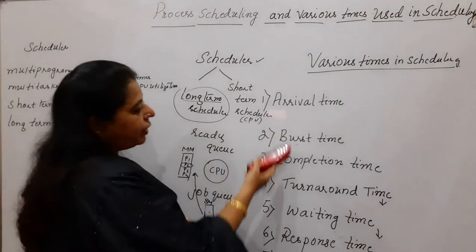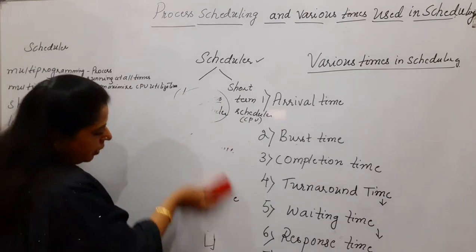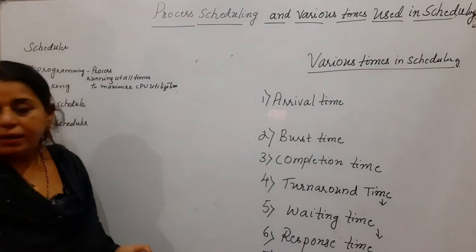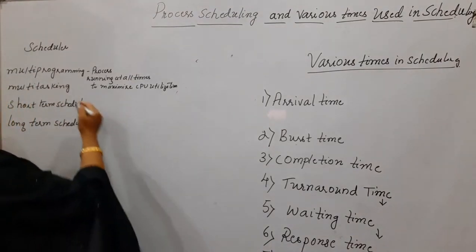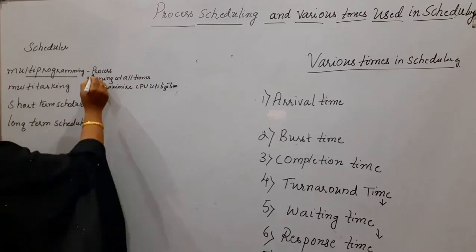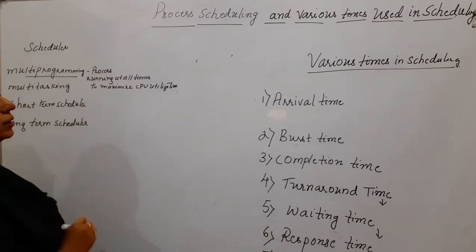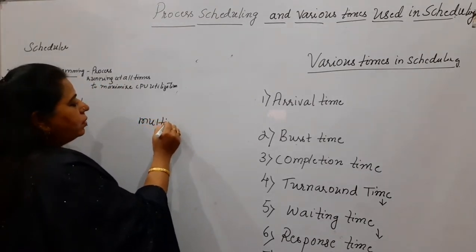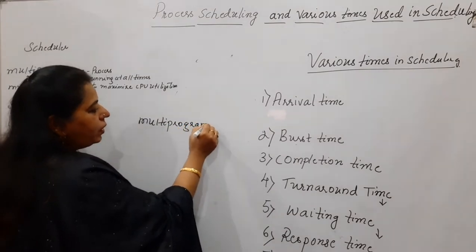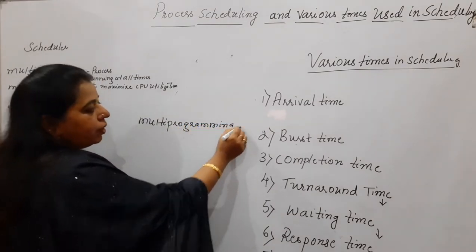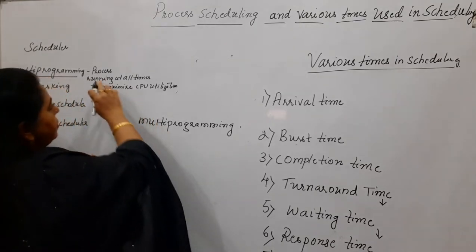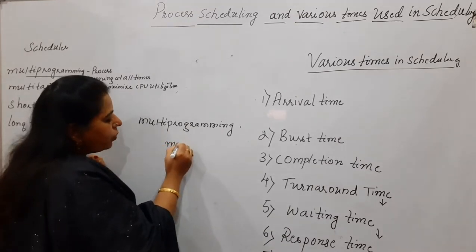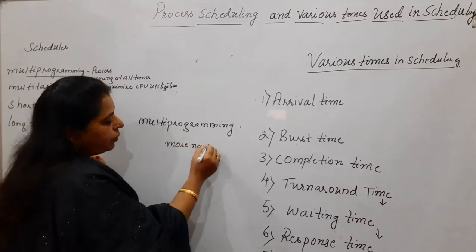Now let me tell you about the different times required in process scheduling. Before that, understand the concept of multiprogramming: process running at all times to maximize CPU utilization. The operating system has an important feature called multiprogramming, which means keeping more number of programs in the main memory.